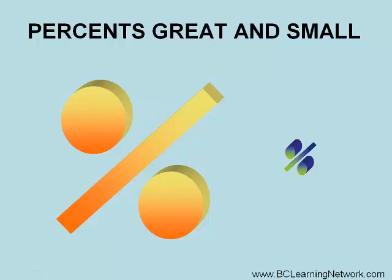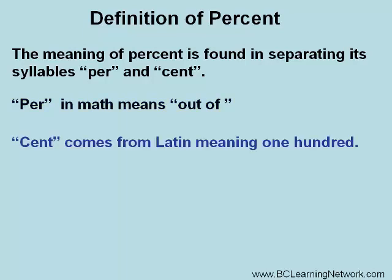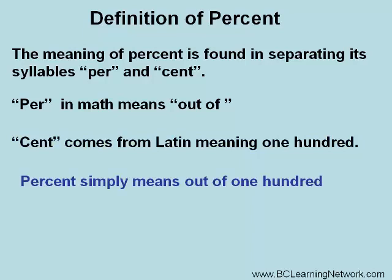This lesson is on percents. The meaning of percent is found in separating its two syllables. 'Per,' in math, means 'out of.' And 'cent' comes from Latin, meaning 'one hundred.' So percent simply means out of one hundred.